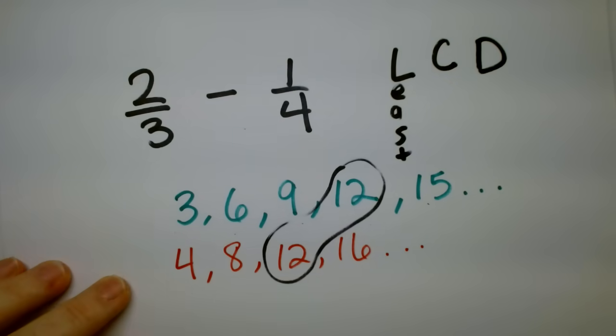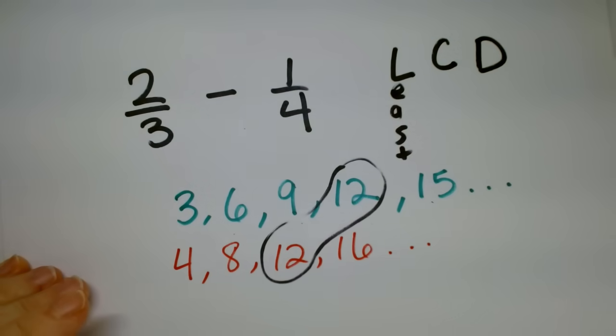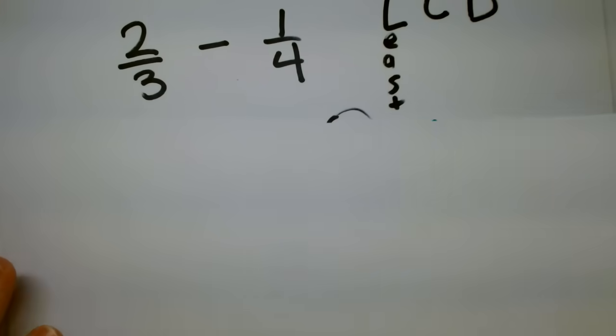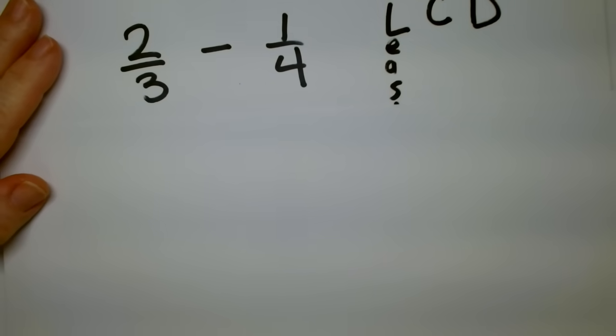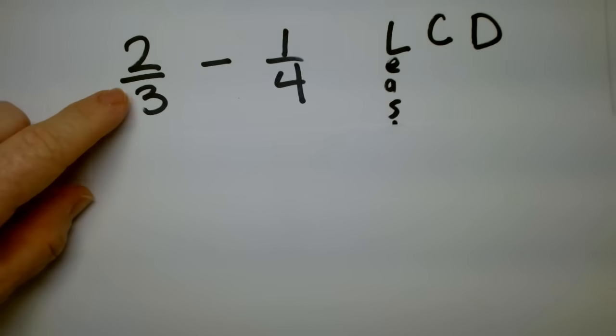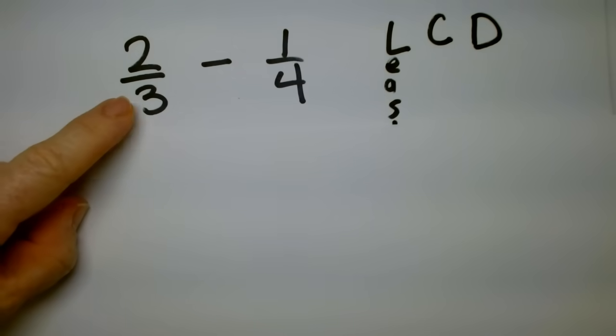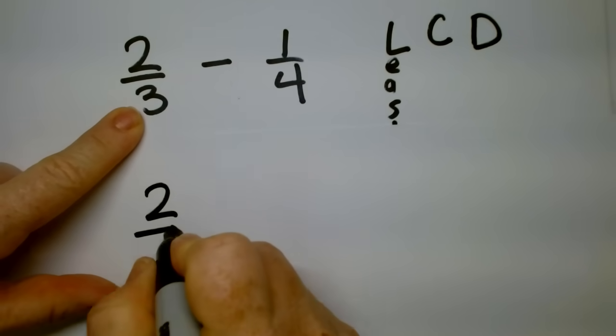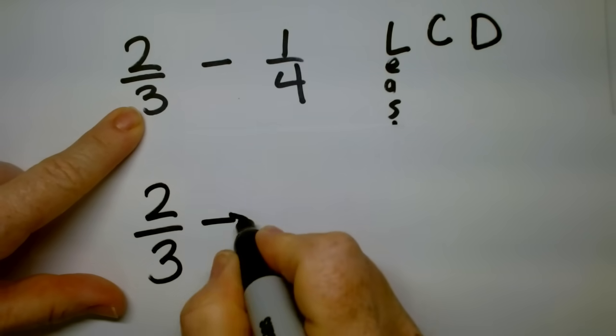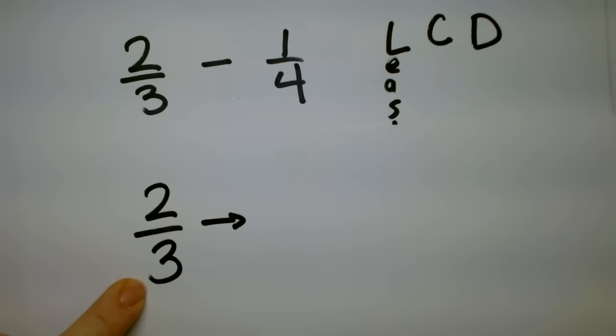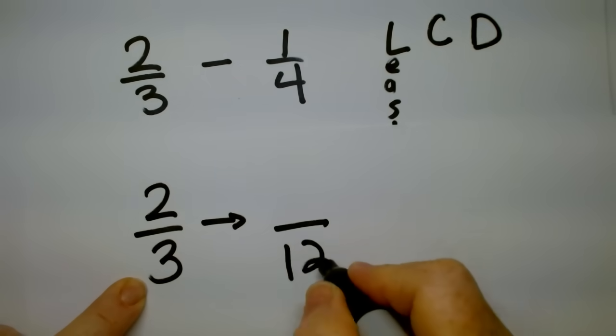This may be the confusing part, or it may actually be the easiest part for you. Watch this. If I know that twelve is the least common denominator, it's the thing that both these numbers go into, what do I have to multiply three by to get to twelve? So I'll write it here. Two-thirds. Three times something gives me twelve. What is it? Yeah, it's times four, isn't it?